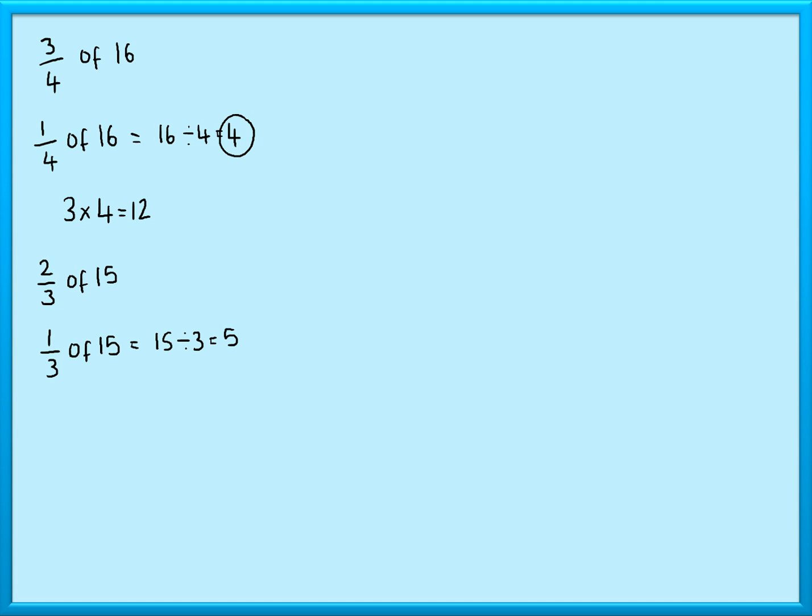That's one-third. I want two-thirds, so I'm going to do 2 lots of one-third, which is 5. 2 times 5 is 10.